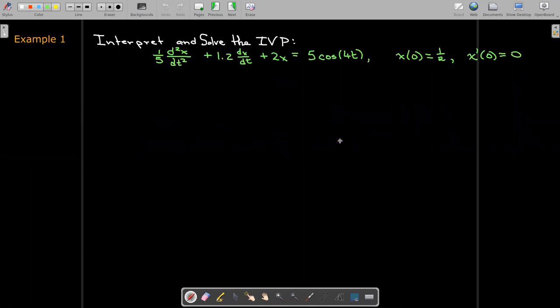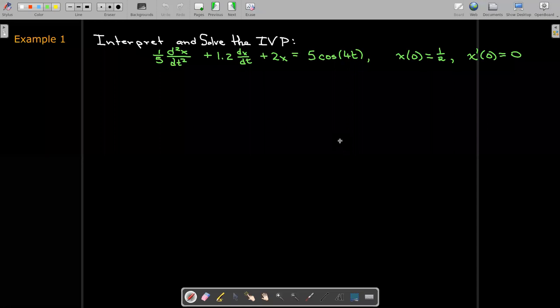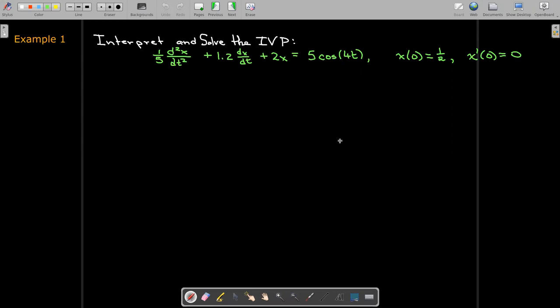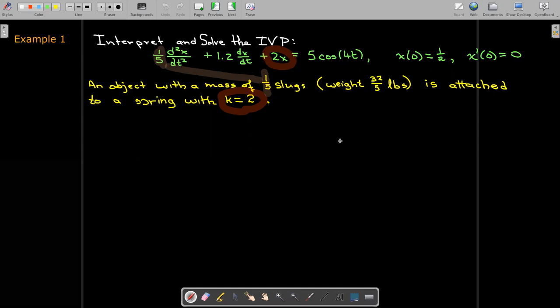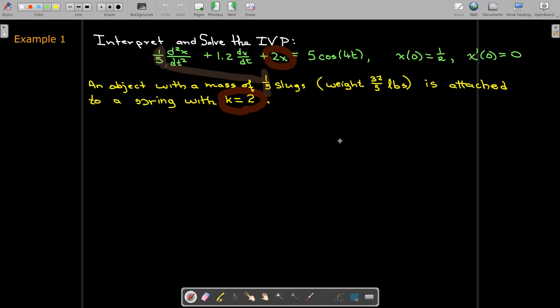So we'd like to interpret and solve this initial value problem. So let's look at this. What this tells us, the coefficient on the second derivative term, on the acceleration term, tells us that the mass of this spring mass system would be 1/5 slugs, or its weight would be 32 over 5 pounds, and is attached to a spring with a spring constant of k equals 2. That we get from the coefficient on x.